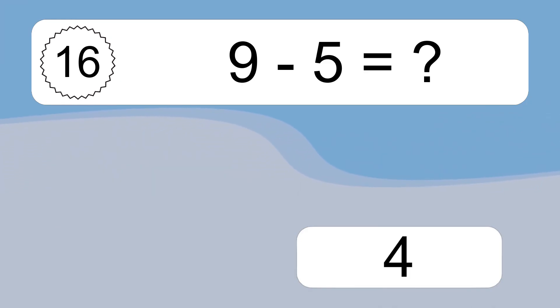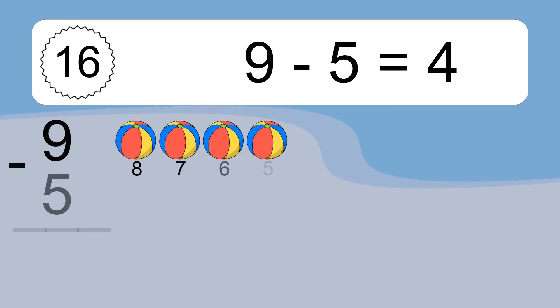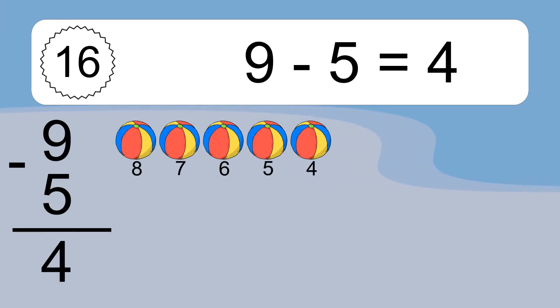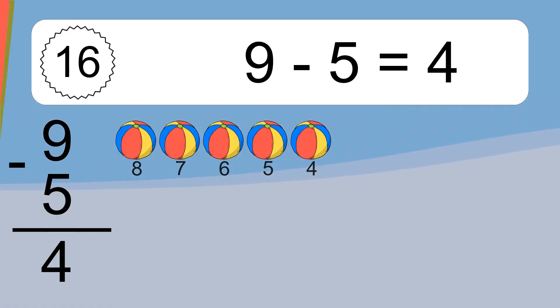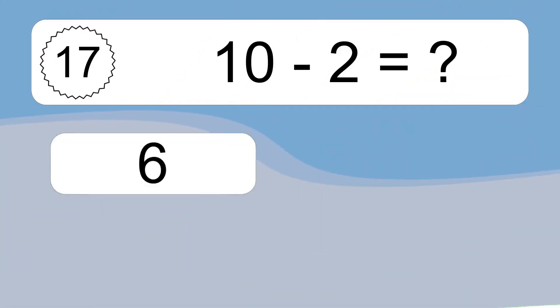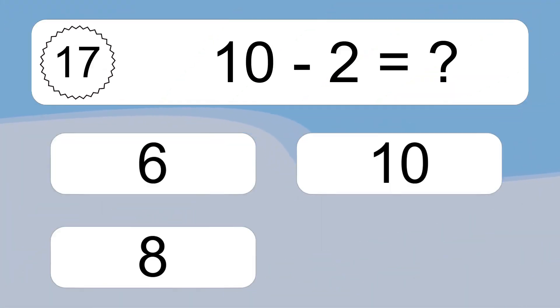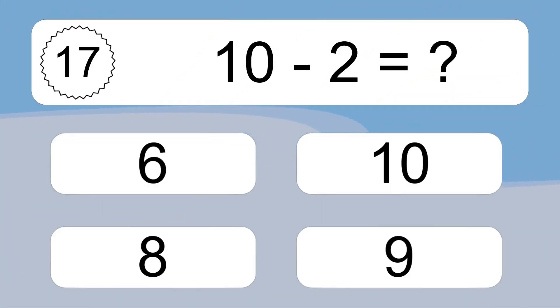9 minus 5 equals what? 9 minus 5 equals 4. Let's count it: 8, 7, 6, 5, 4.